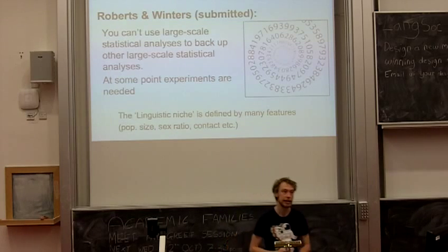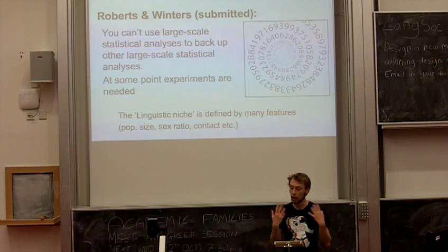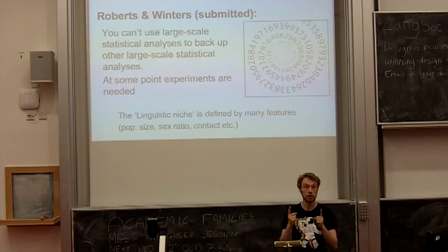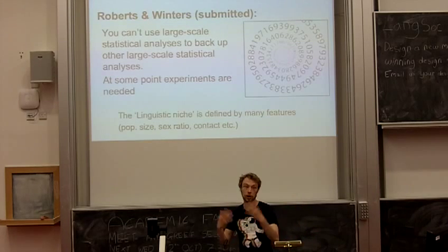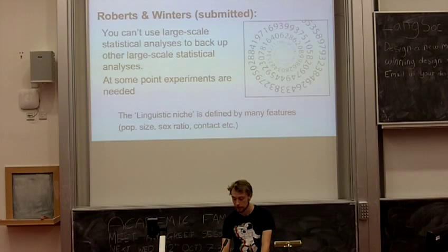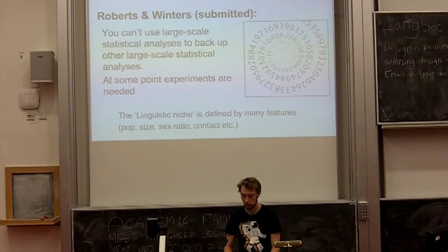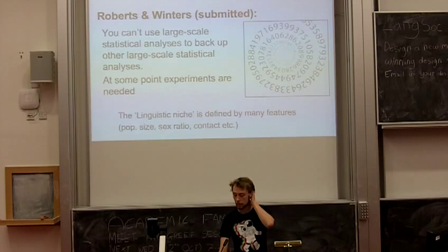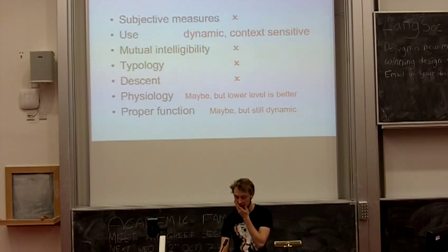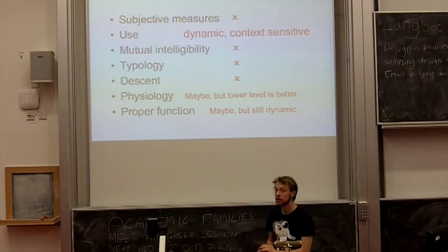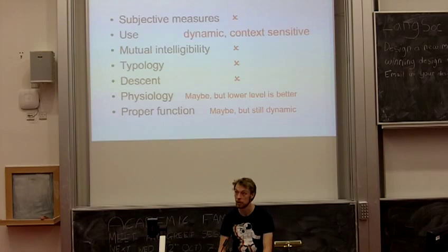The linguistic niche idea — that languages adapt to different niches — is itself made up from many different concepts. It depends on population size, sex ratio, alcohol consumption, contact with other languages, and so on. Even if you can use this method to tell languages apart, lower-level mechanisms will do it just as well. So why not just use the lower-level mechanisms? Proper function might still work, but we still have to admit that languages are dynamic things — not fixed. They can change over time, just as English has.